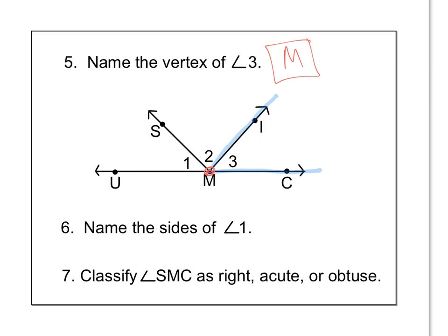Next, we need to name the sides of angle 1. So the sides of angle 1. First of all, let me highlight angle 1. So angle 1 is right here. And the sides of that angle, one of them starts at m and goes out toward s. So I would call that ray m, s. The other one starts at m and goes out towards u. And so I would call that ray m, u. They both start at m and then go out from there.